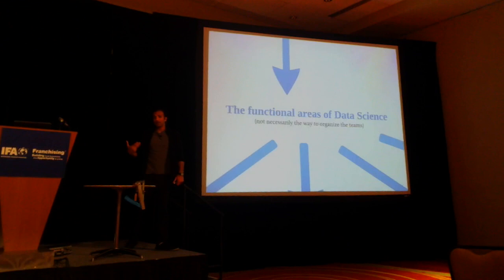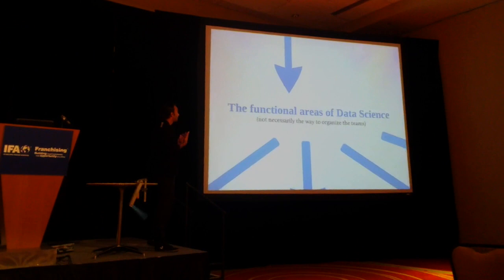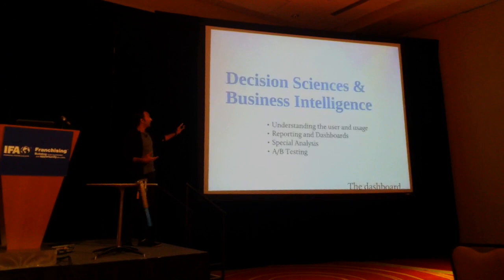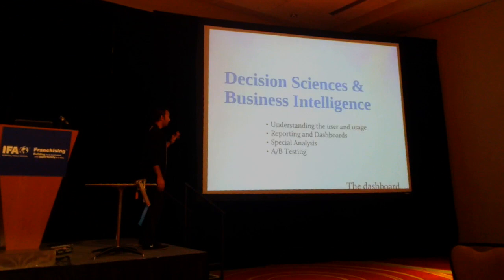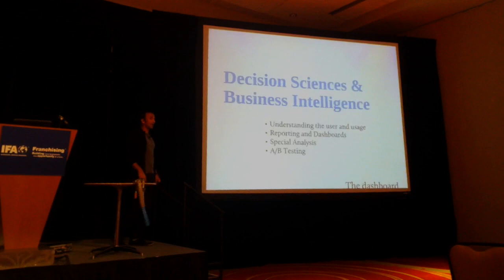And that's what's happening. How does this actually break down into the way people are using data science these days? It's really these functional areas. The first starts with one of the most important: decision science and business intelligence. These are the people who understand the user, the usage — they build reports, dashboards. They use special analysis, they do testing, A-B testing.